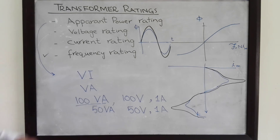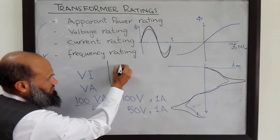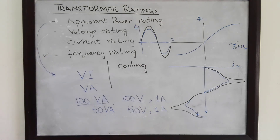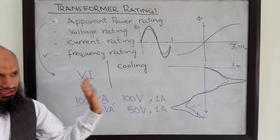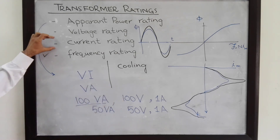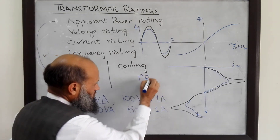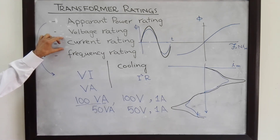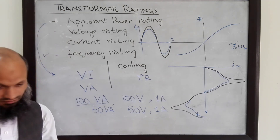The ratings of transformers can be slightly increased by cooling. If you have forced cooling, then you can remove the excess heat that is produced by the I²R losses. You can remove that particular heat, and therefore current ratings and hence also the power ratings can be increased for a particular transformer.